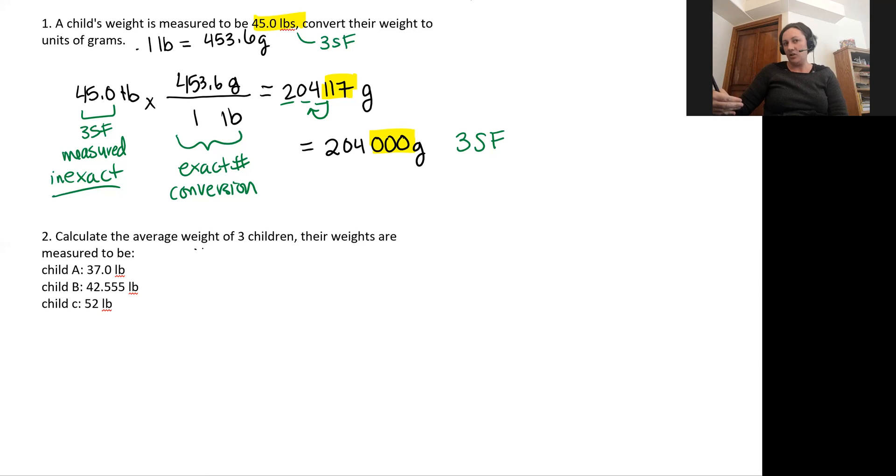Now let's look at addition and subtraction. Our next problem says we need to calculate the average weight of three children. We're given three different weights. So I'm going to set up my problem. An average is when I take the sum of my three measurements and divide it by the number of measurements that I have. So this will look like 37.0 plus 42.555 plus 52, all divided by three measurements. So I'm going to take this step by step. I have two steps that are actually occurring here. One, I'm adding up all of my values on the top of my equation. And two, I'm going to divide by three.